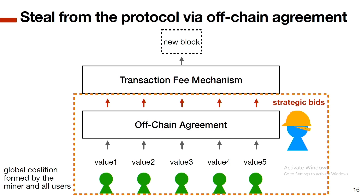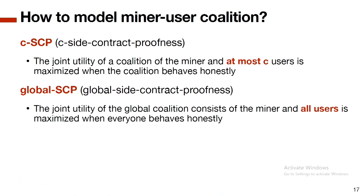The off-chain agreement involving everyone — the miners and all users — is the most powerful coalition that can steal from the protocol. If we can rule out the possibility that a global coalition can gain, we also rule out the ability to steal from the protocol. Formally we call this Global SCP: the joint utility of the global coalition — the miner colluding with all users — should not increase if they deviate from the protocol.